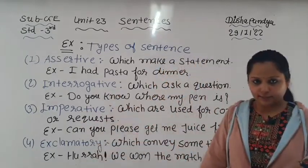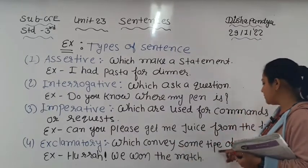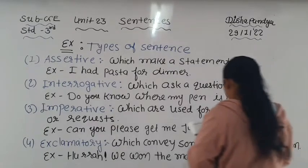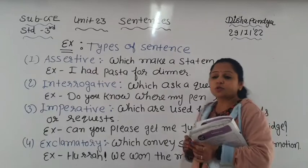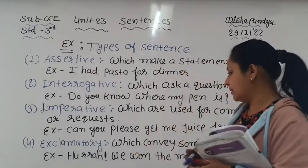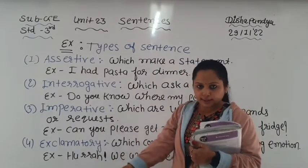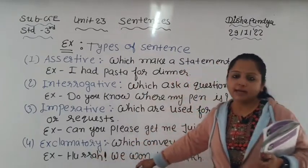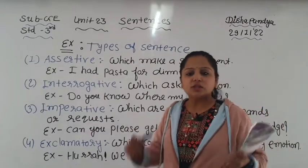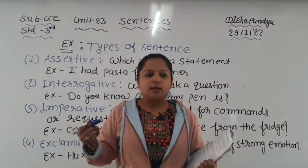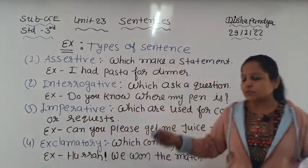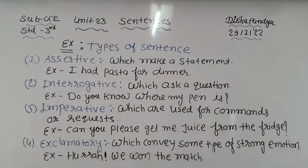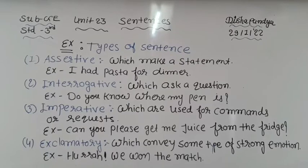Number four: exclamatory - which conveys some type of strong emotion. Whenever a strong emotion is shown in a sentence, we put an exclamation mark at the end. For example: 'Hurray! We won the match!' When we win a match, we feel excited and happy - that exclamation is an exclamatory sentence. So the four types are: assertive, interrogative, imperative, and exclamatory.